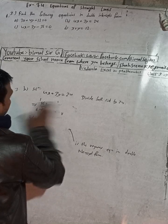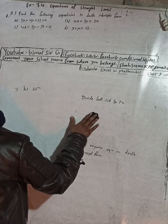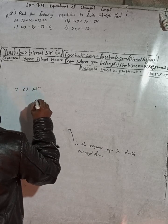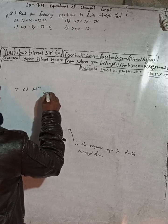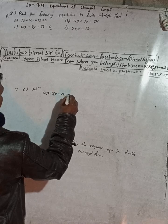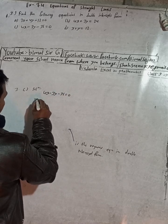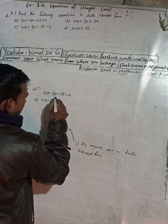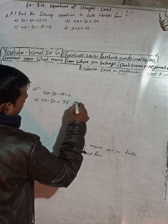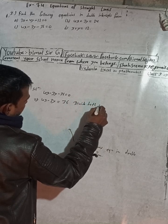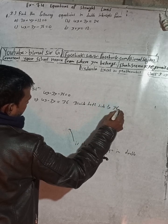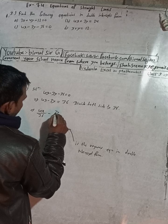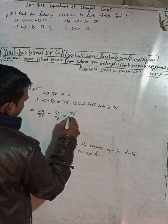Now number C. Here: 4x minus 3y minus 36 equals 0. This can be written as 4x minus 3y equals 36 — the minus 36 moves to the right side as plus 36. Now divide both sides by 36.